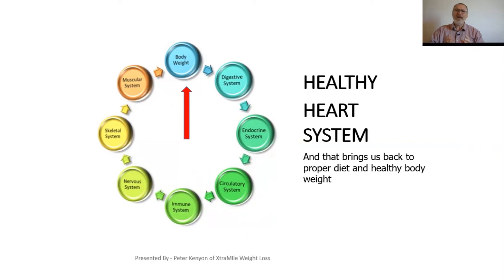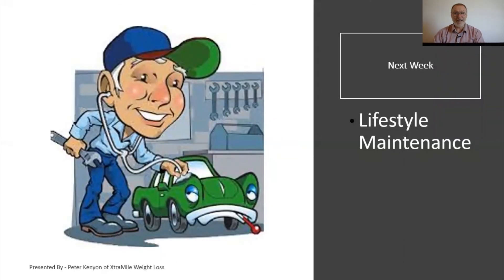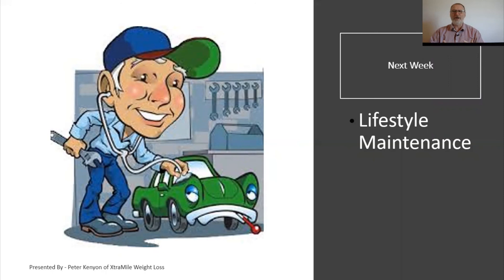You see, you can't just work on one system without affecting the other systems. Nothing is separate in the body. It's all interrelated. Next week, we're going to be talking about lifestyle maintenance because we get to the point you've reached a goal weight. So let's talk about lifestyle maintenance. Thank you for listening to the 110 Steps Weight Loss Workshop. This has been week nine.